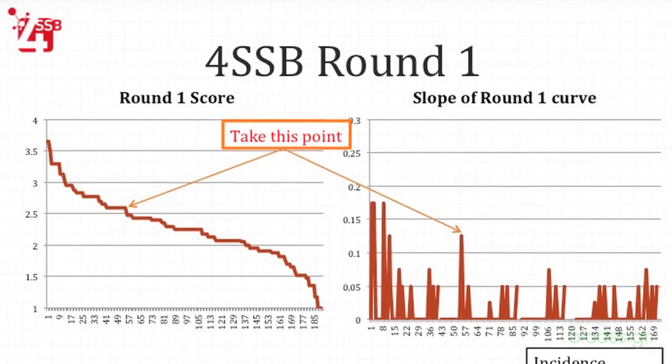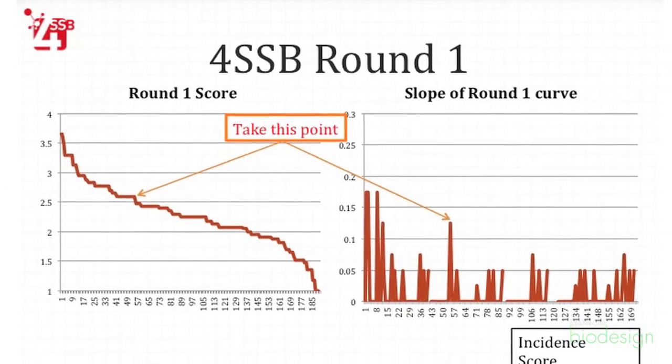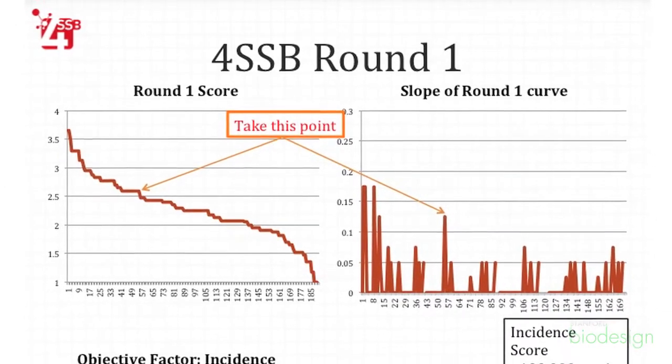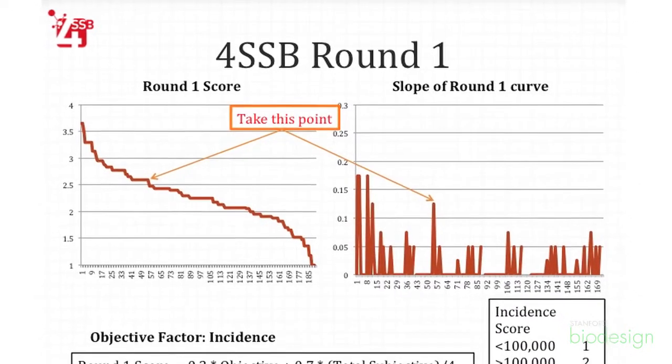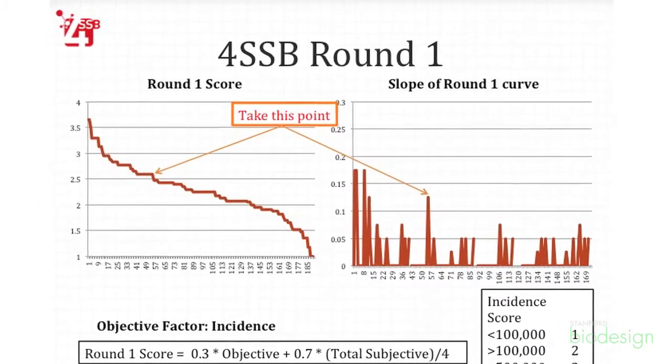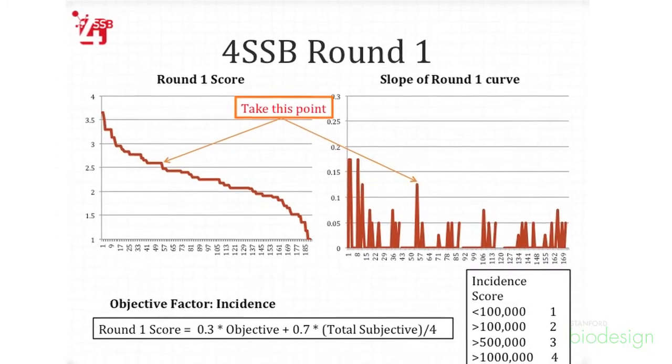If the incidence is above 100,000 per year we score it at four, then at 50,000 it's three, 10,000 is two, and less than 100 is one. We looked at how each of the needs scored and decided on the cutoff based on the slopes. This plot shows the rate of change of the score for each need, and you can see there are clear break points.